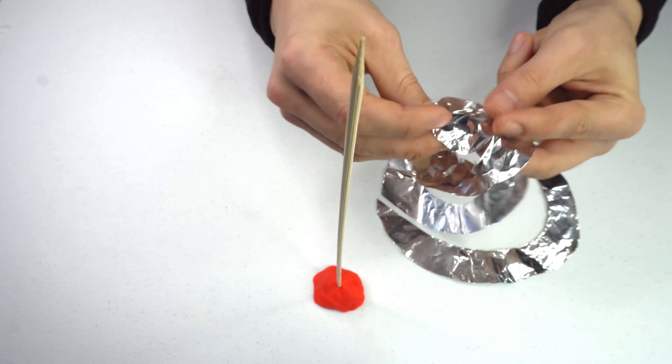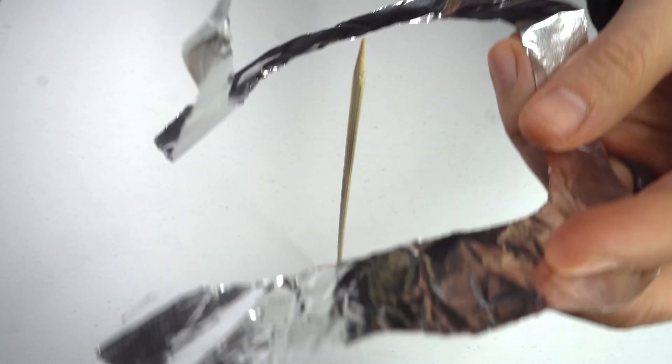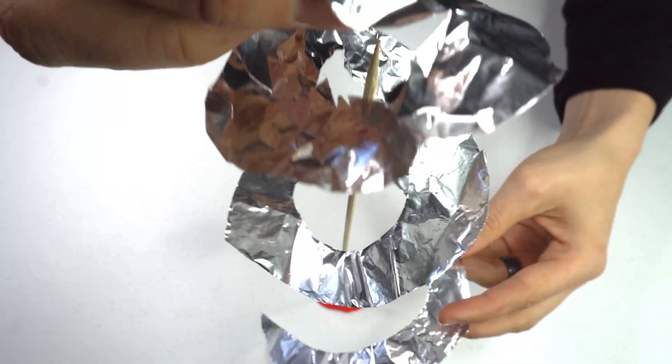Next, take that aluminum spiral and place it over the shish kebab skewer, and crimp the top of it just slightly.